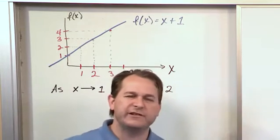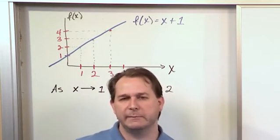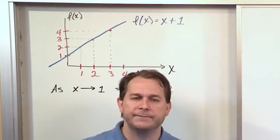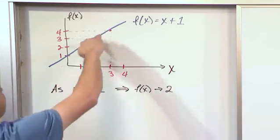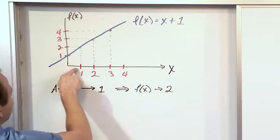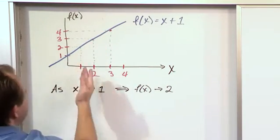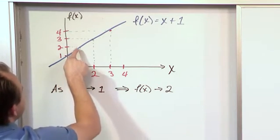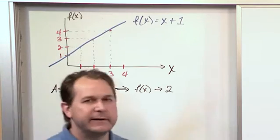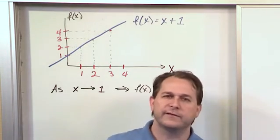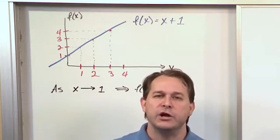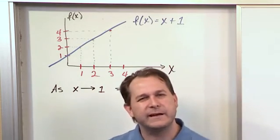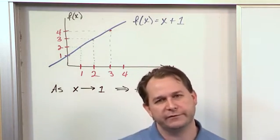Without getting into a bunch of definitions, this is the basic concept of a limit. You have a function — in this case a simple straight line — and you look at how the function behaves as x approaches some number. As x gets closer and closer to 1, we actually approach 2. But it's important in limits: when you're taking the limit of something, you don't ever actually get to x = 1. You just get really, really close to it.